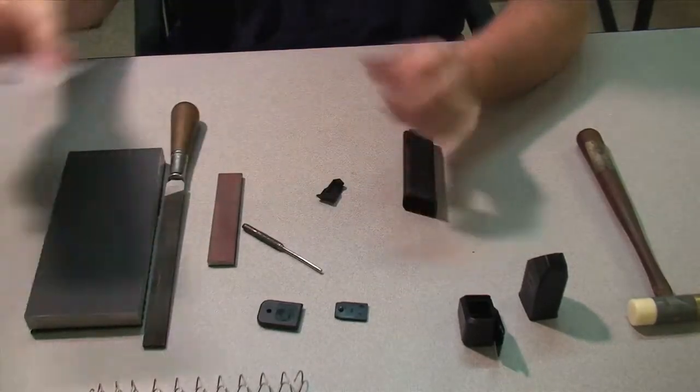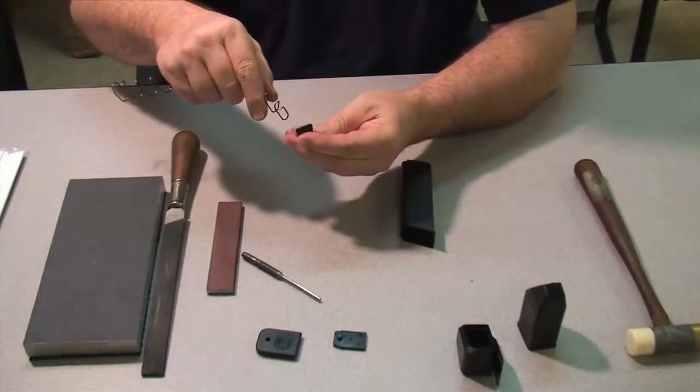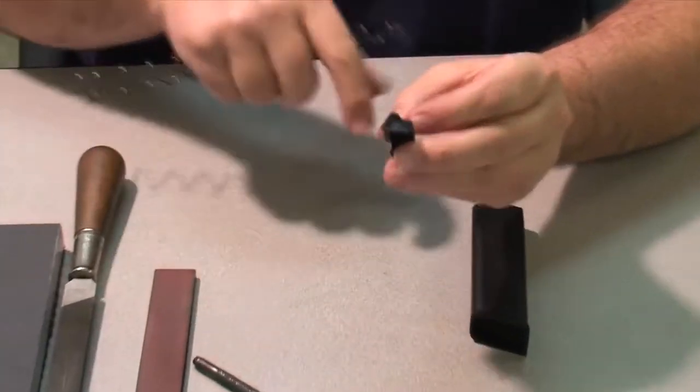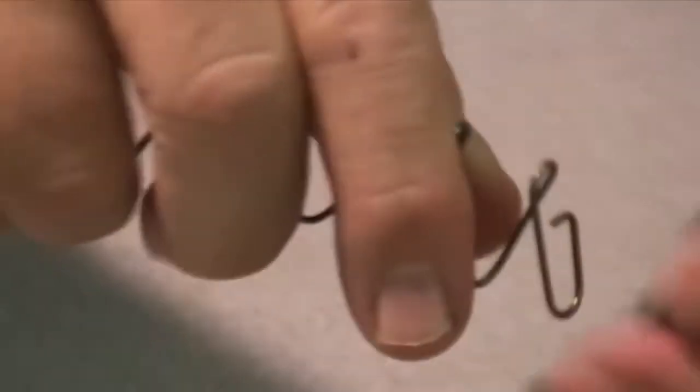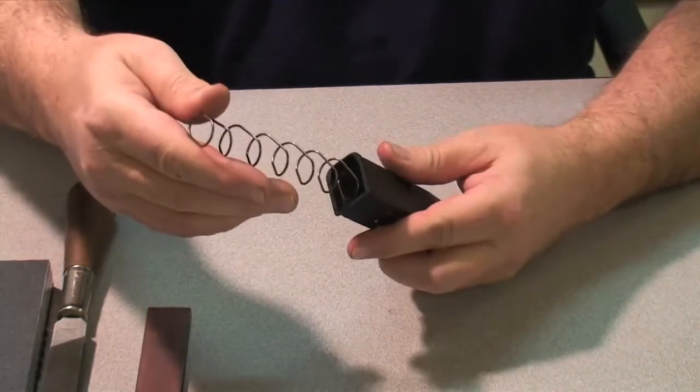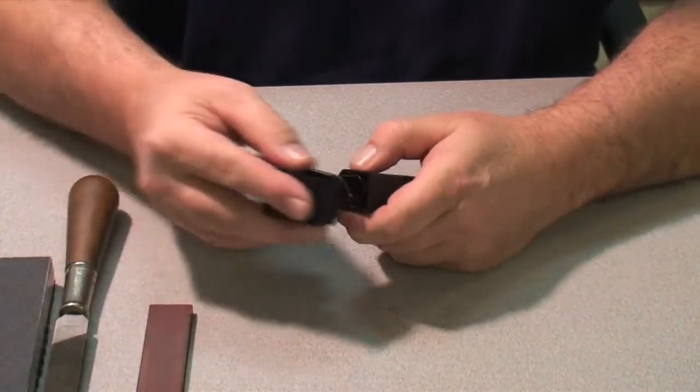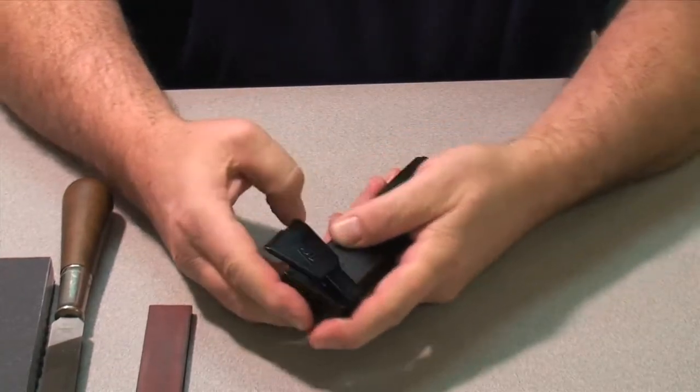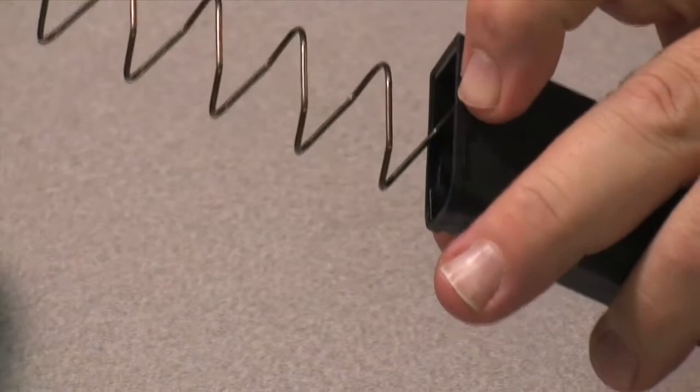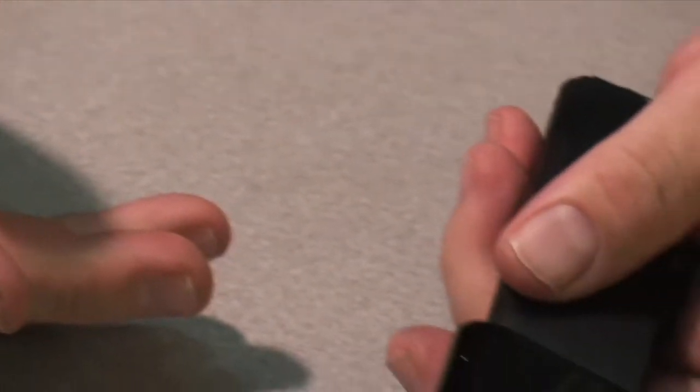We're going to go ahead and assemble it with the Dawson Precision parts first and load it to show you what potentially can happen and where this follower with the standard configuration in the back of it will impede the loading of the magazine. To install the follower, you simply push it, it'll clip on there. We're going to install the spring and follower into the mag tube, then install the Dawson Precision base pad.